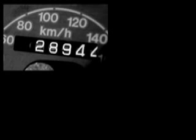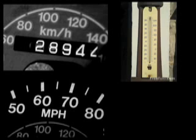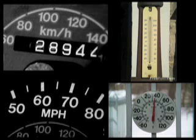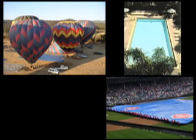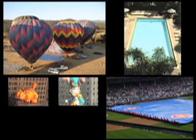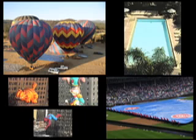Gauges are found in our vehicles to measure our speed, and thermometers are used to measure the temperature. Measurement determines capacity and area. How much is needed to fill the balloons and pool? How much is needed to cover the field?